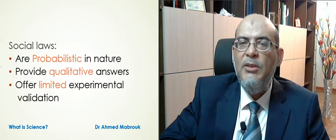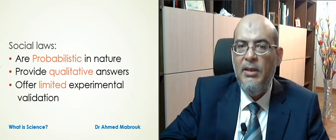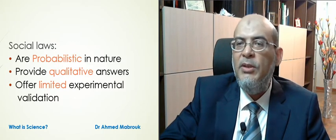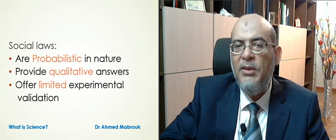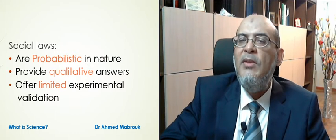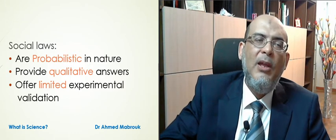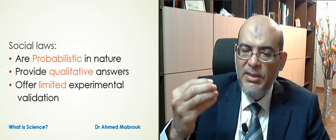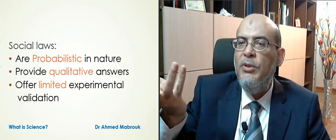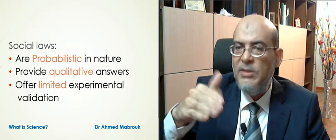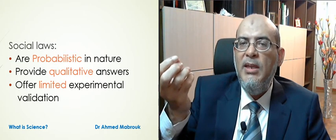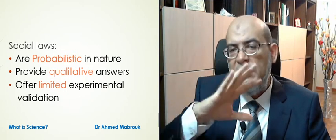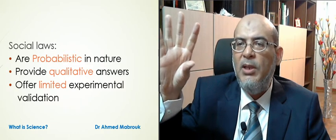To summarize: social science laws are statistical in nature. They don't usually provide quantitative answers — sometimes they provide qualitative answers. Even the typical example people give, the law of demand and supply, doesn't give quantitative answers. If I know exactly the demand and supply in numbers, I wouldn't be able to predict how much higher or lower the price will go. Also in many cases, social laws do not offer a high degree of experimental validation — though this is a general statement, since not all social laws are on the same level.